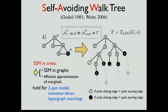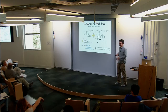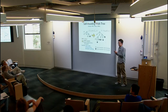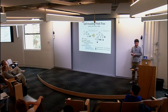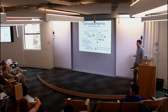This construction of the self-avoiding walk tree holds for all two-spin systems and also for the monomer-dimer model and hypergraph matchings. Regarding uniform activities: yes, we assume the same Hamiltonian at each edge — the interaction parameters beta, gamma, lambda are constant across the graph.